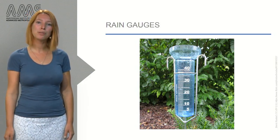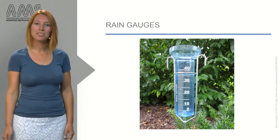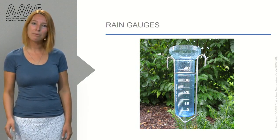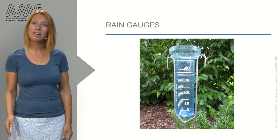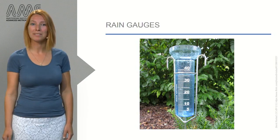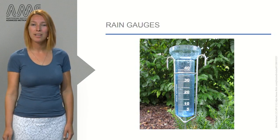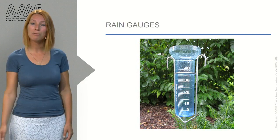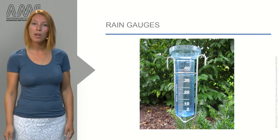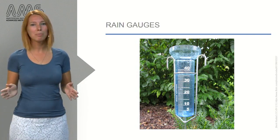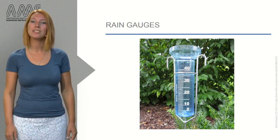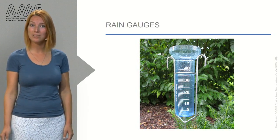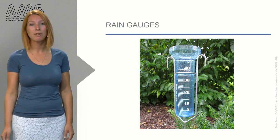The preferred spatial resolution of measurements is linked to the time interval at which you measure. Daily rainfall patterns are less variable than hourly rainfall patterns, meaning that more sample locations are required to capture hourly rainfall. According to some studies, the preferred measurement resolution for urban applications is in the order of grid sizes of 100 meters and in 5-minute intervals.